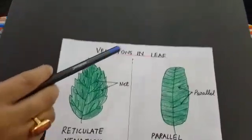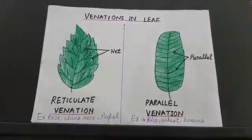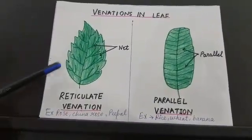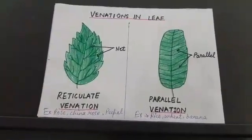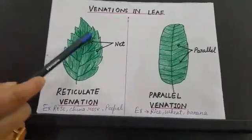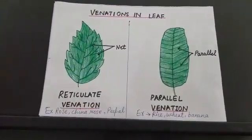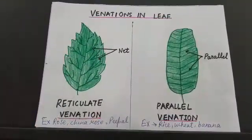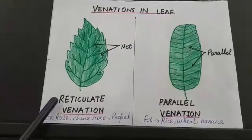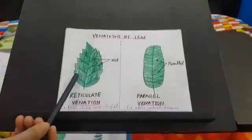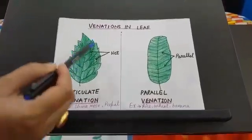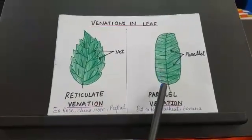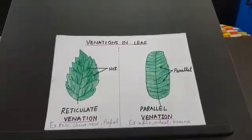Next is venation in leaf. There are two types of venation: reticulate venation and parallel venation. The arrangement of veins on the lamina is called venation. In case of reticulate venation, veins are arranged in an irregular way, forming a net-like structure. In case of parallel venation, veins are arranged parallel to each other on both sides of the midrib.